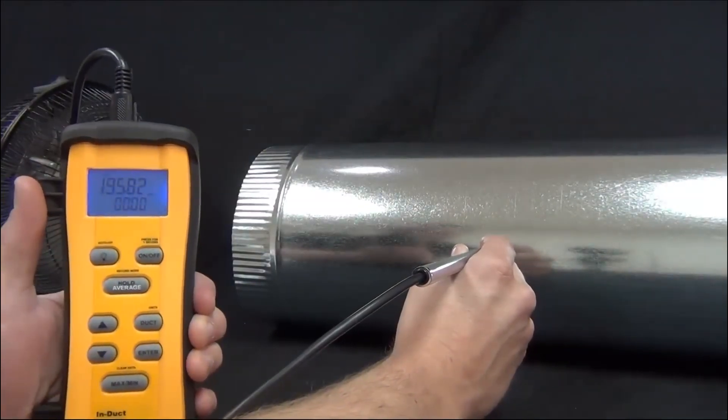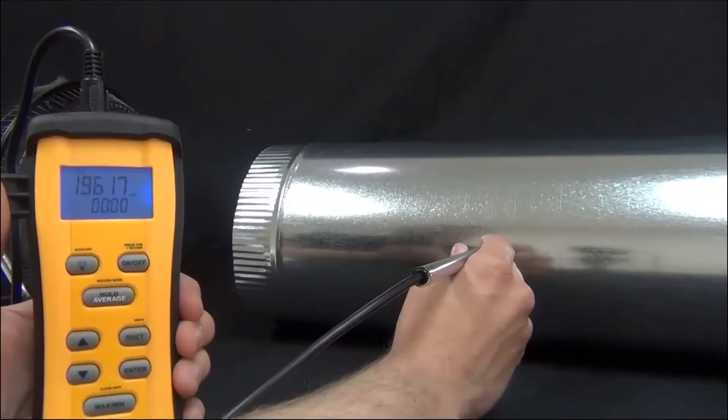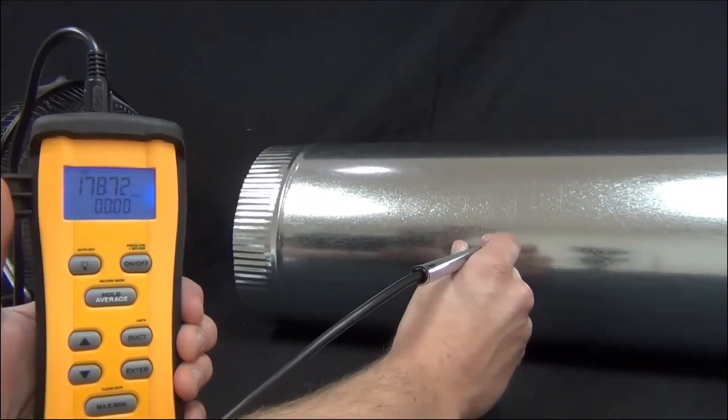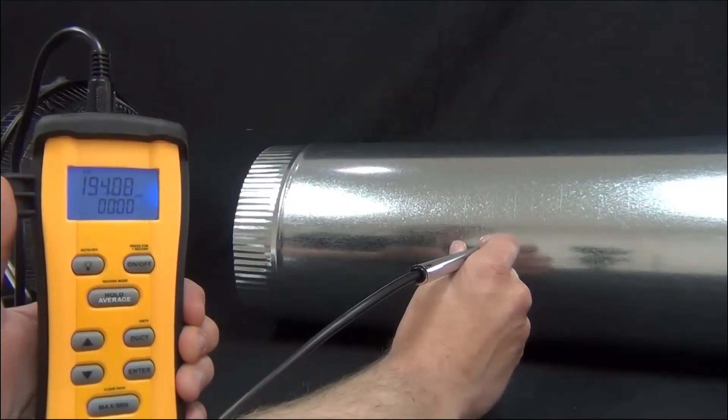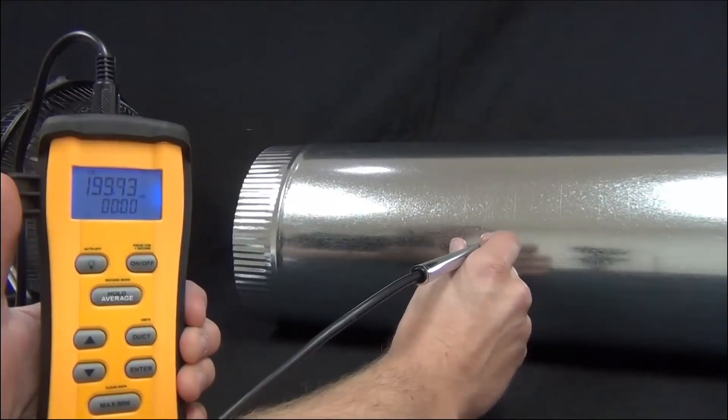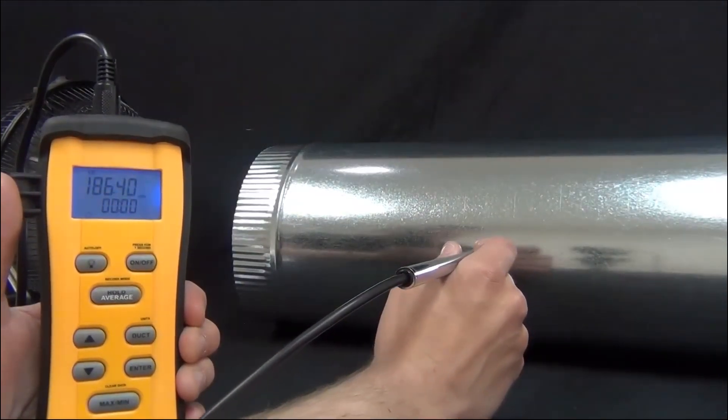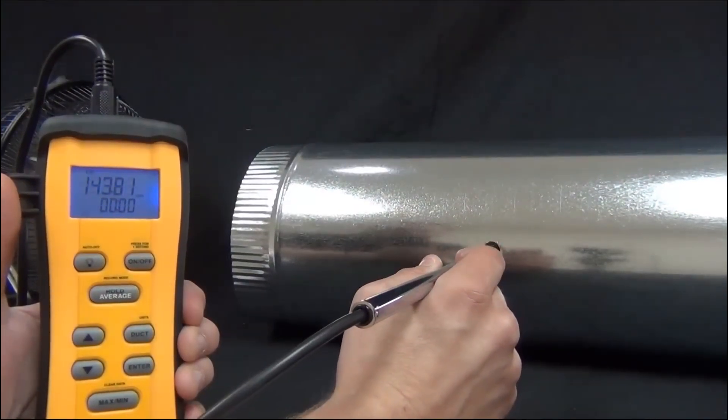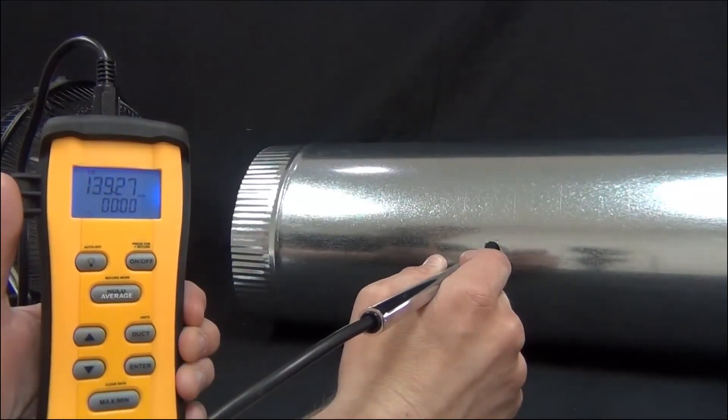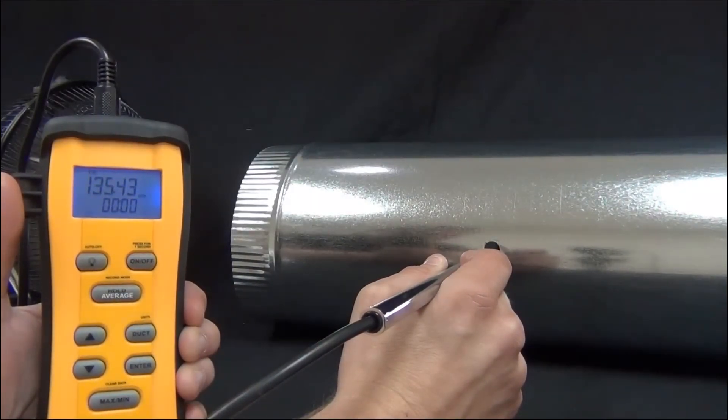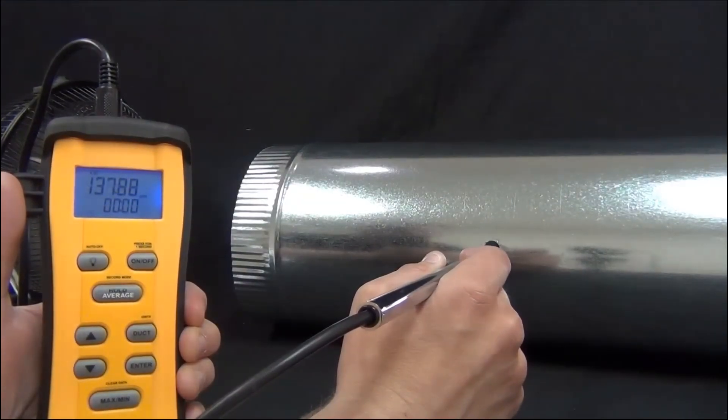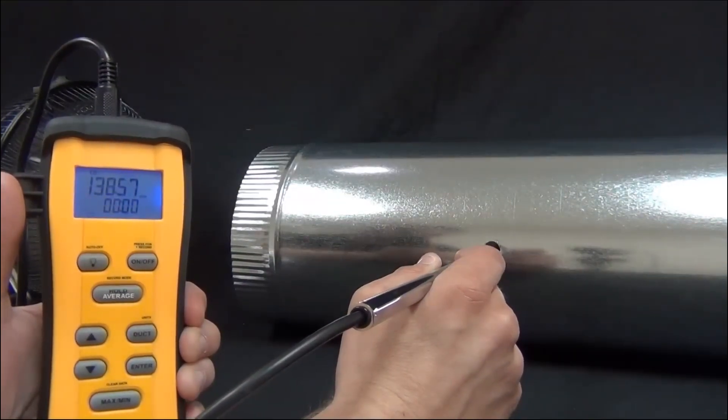Now what you'll see is as I just read it live, the CFM is dramatically different on the edge of the duct versus in the middle. So we're getting 195 CFM on the edge of the wall. And as I move it towards the middle, right in the middle, it's at 120, 130 in that range. So it's a pretty big difference. So what we want to do is make sure that we get an accurate average across the duct.